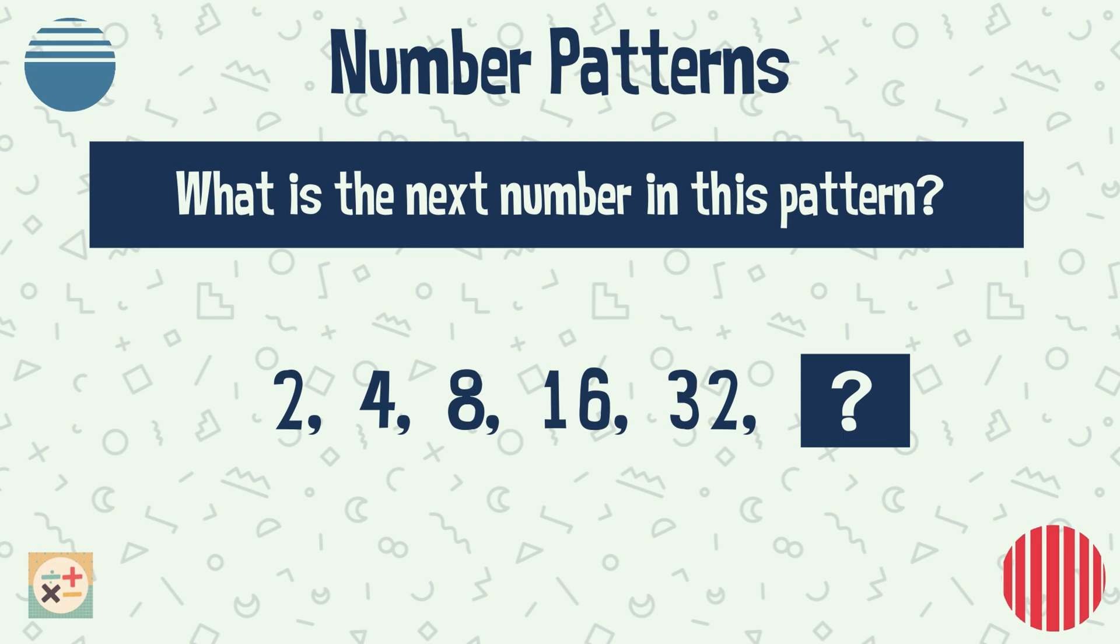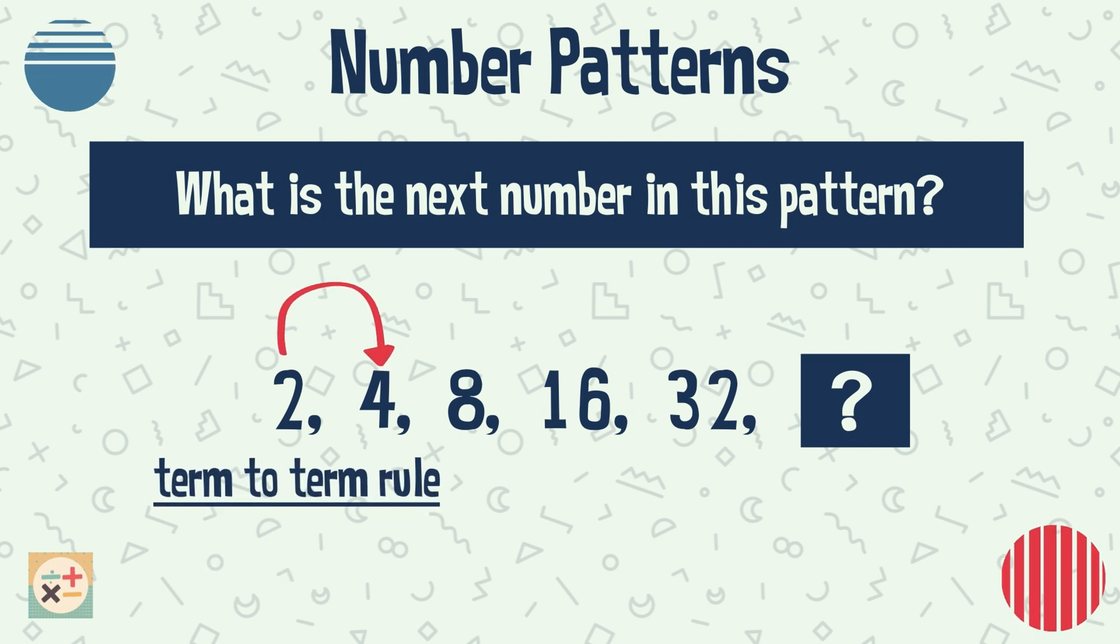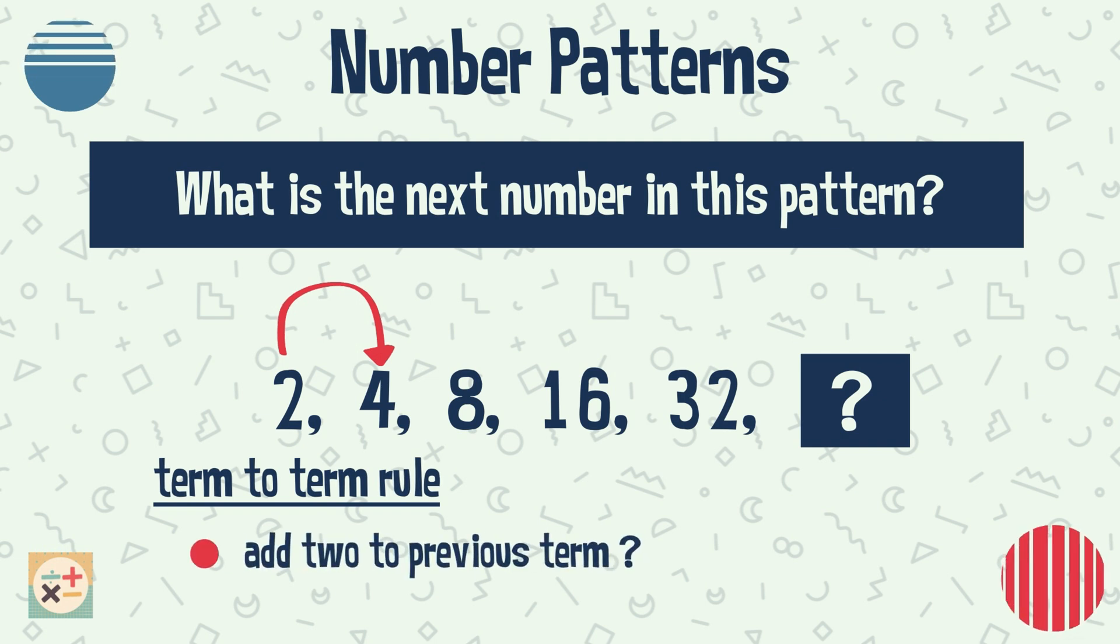We need to look at the relationship between the numbers, also called terms. So what can be done to the first term, the number 2, to get the second term, number 4? We should generally check for addition, subtraction, multiplication, division, etc. We could add 2 to the number 2 to get 4. We can also multiply it by 2, as 4 is the double of 2.